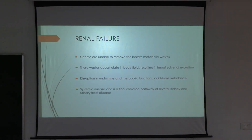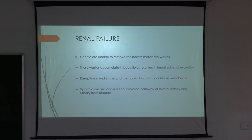Renal failure occurs whenever the kidney fails to do its normal function. The kidneys will be unable to remove the body's metabolic wastes, which accumulate in the body fluids, resulting in impaired renal function. This causes disruption in endocrine and metabolic functions, acid-base balance, and the renin-angiotensin-aldosterone axis, leading to systemic disease.